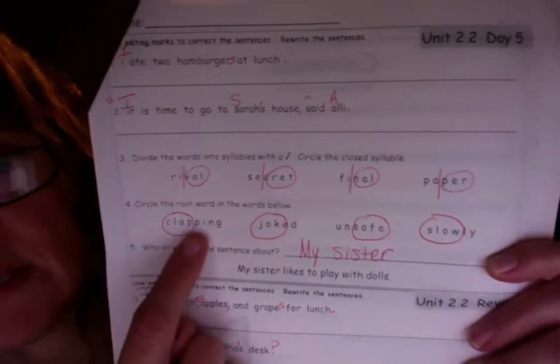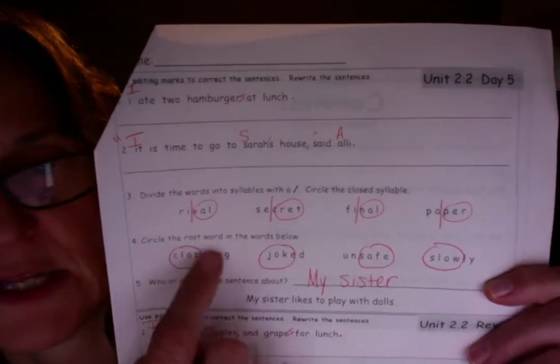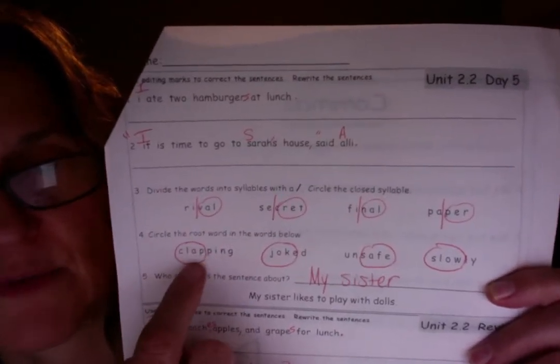Number four. Circle the root word in each word below. Clapping. Not this P. That was added because it's a vowel consonant, right? So just clap. C-L-A-P is the root word.